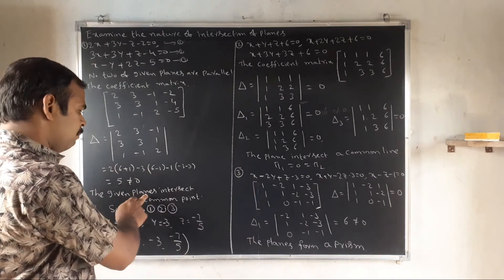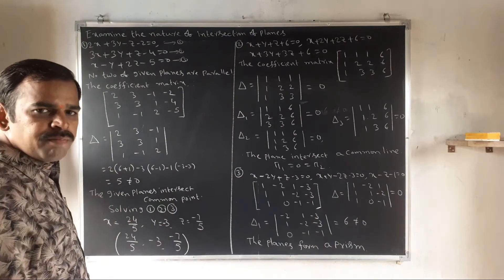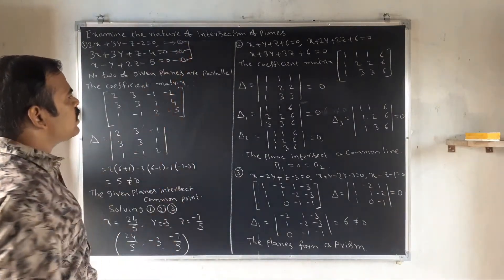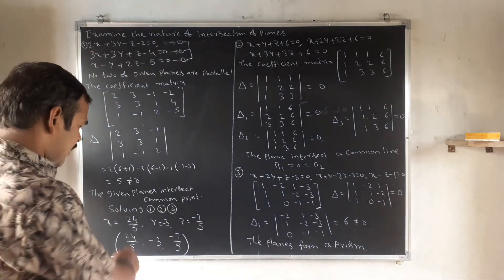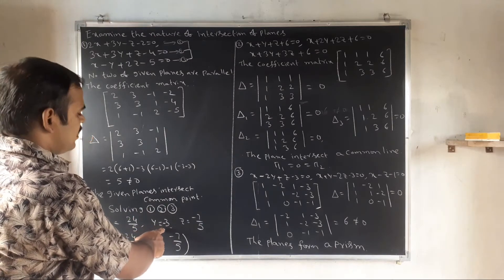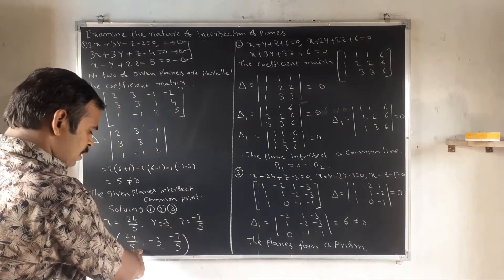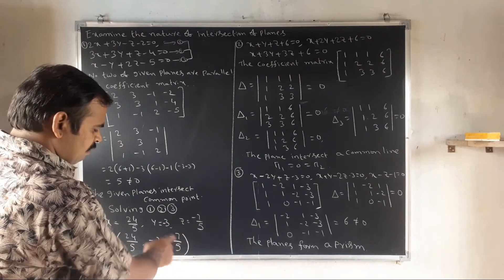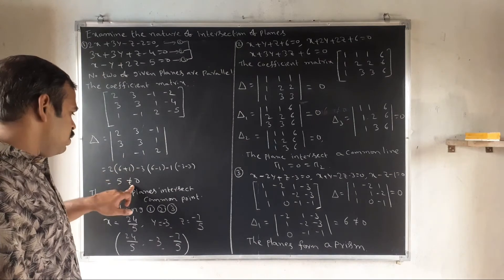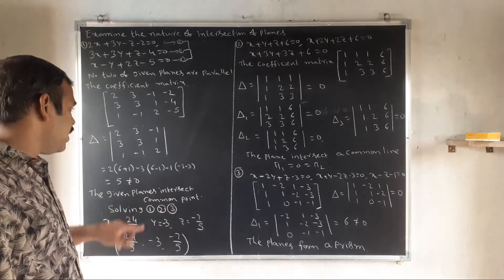Since delta is not equal to zero, the given planes intersect at a common point. To find the common point, solve the three equations simultaneously. Solving gives x = 24/5, y = −3, z = −7/5. Therefore, the common point is (24/5, −3, −7/5). This completes Method 1, where delta ≠ 0 means the planes intersect at exactly one common point.